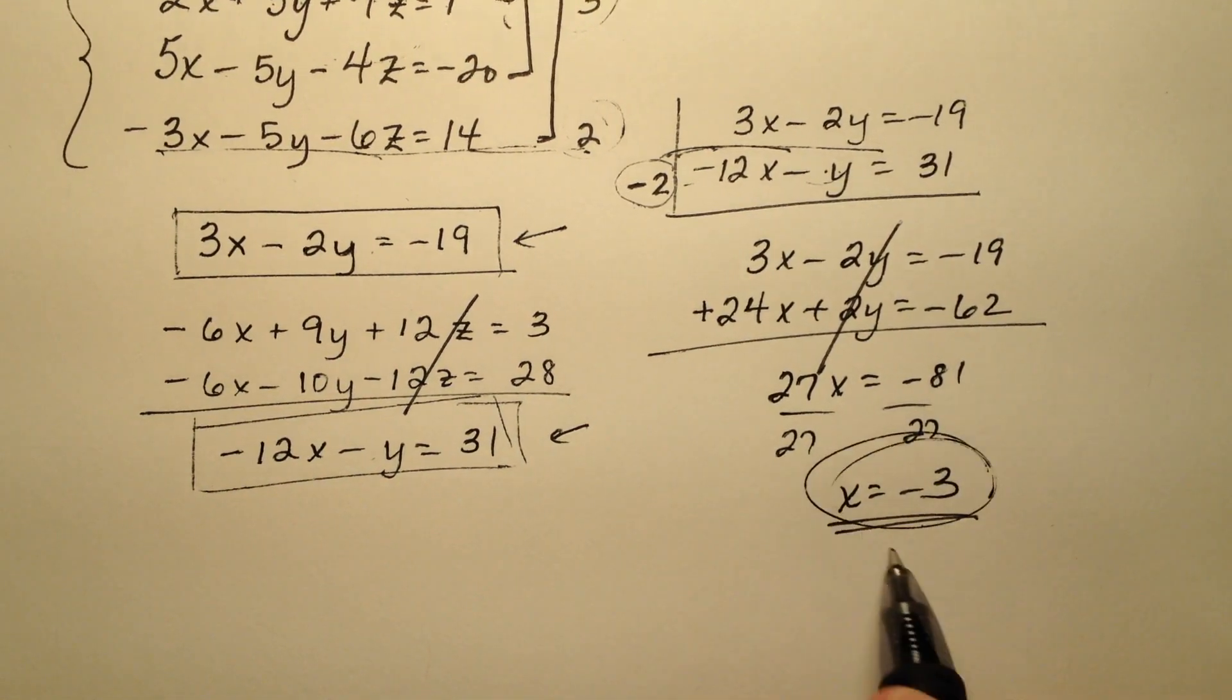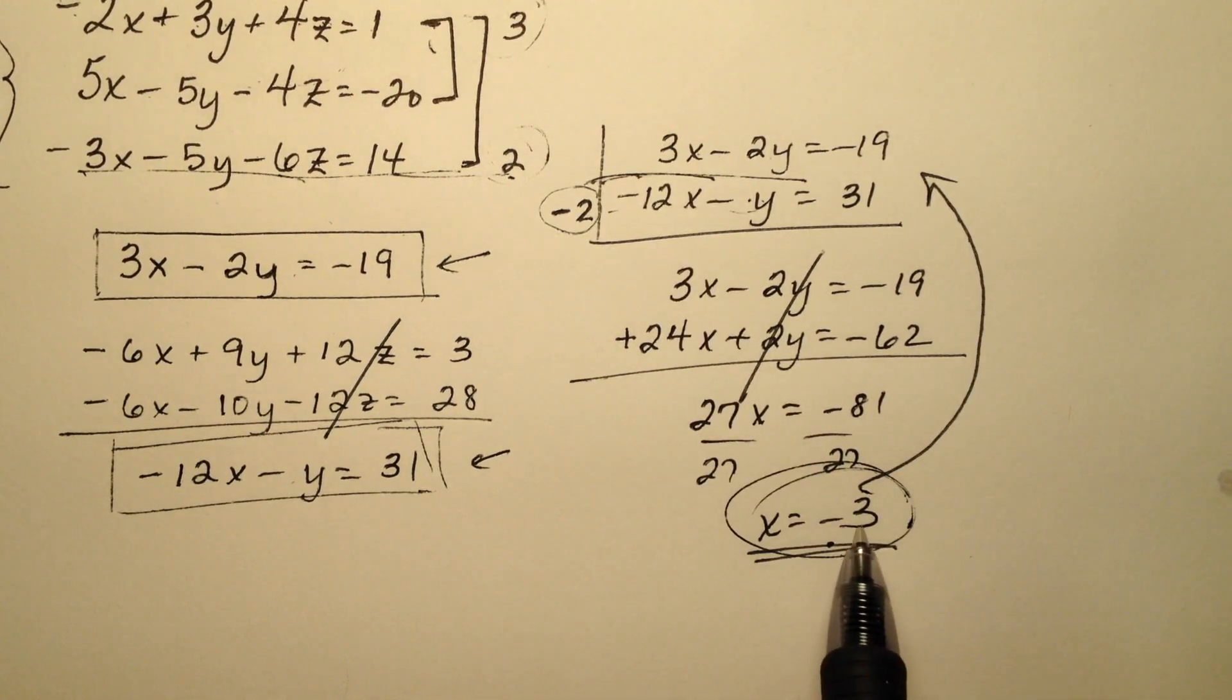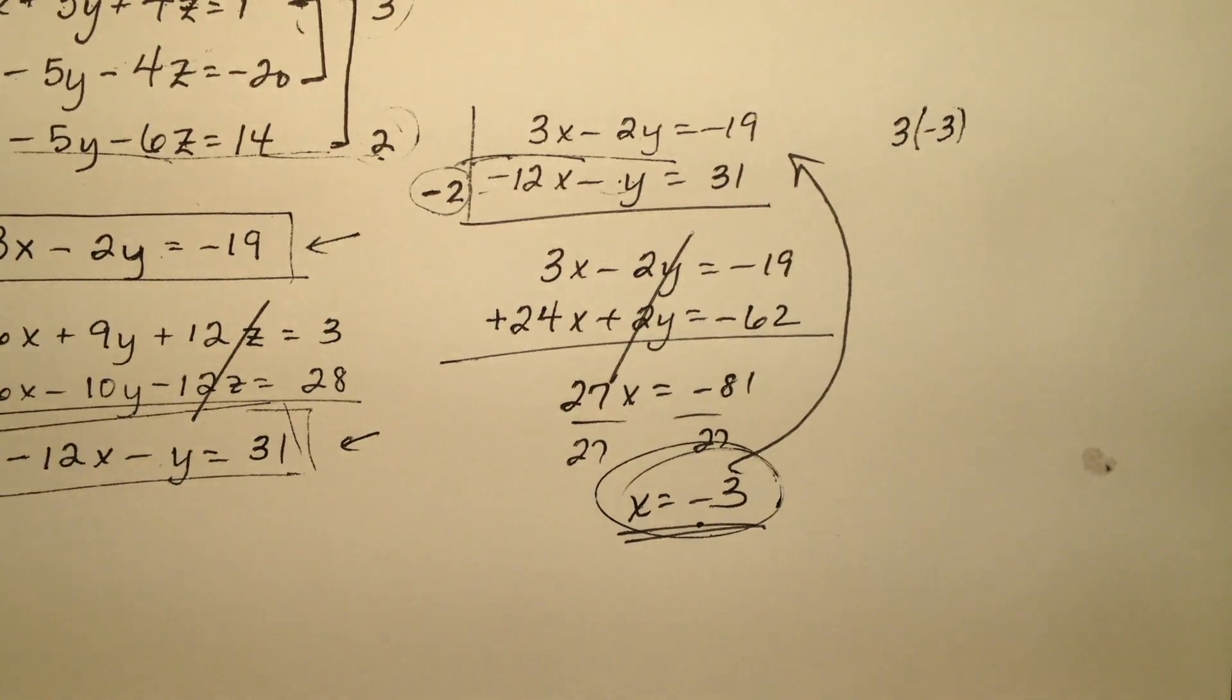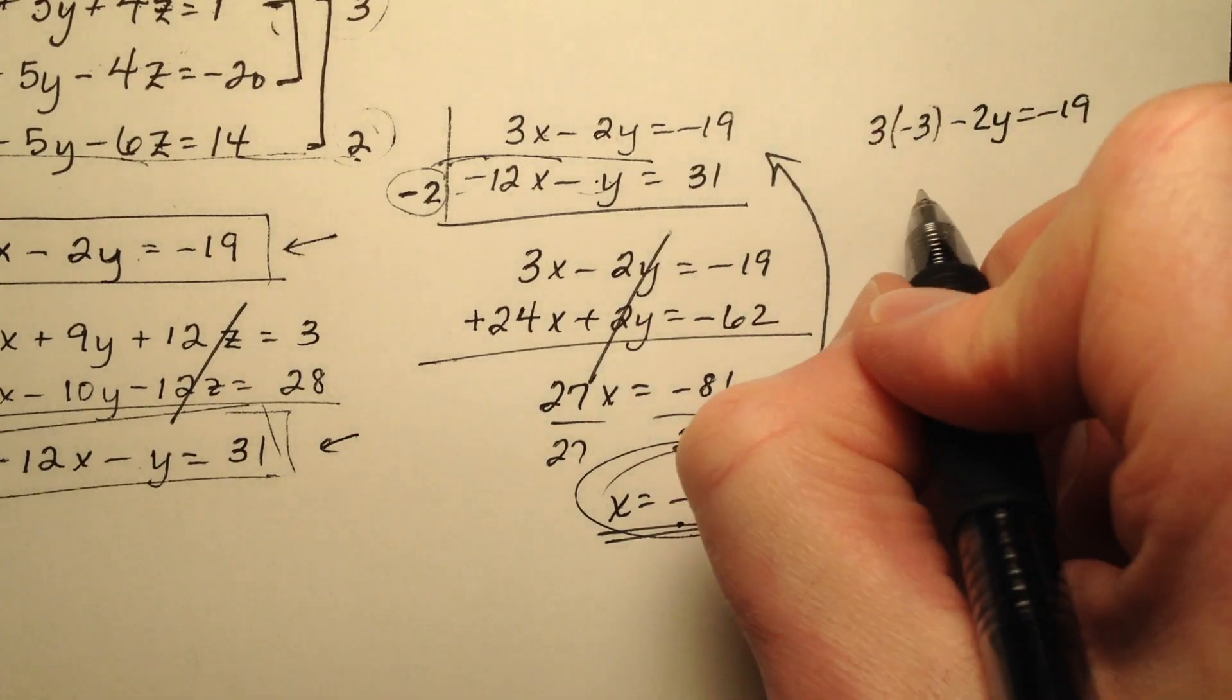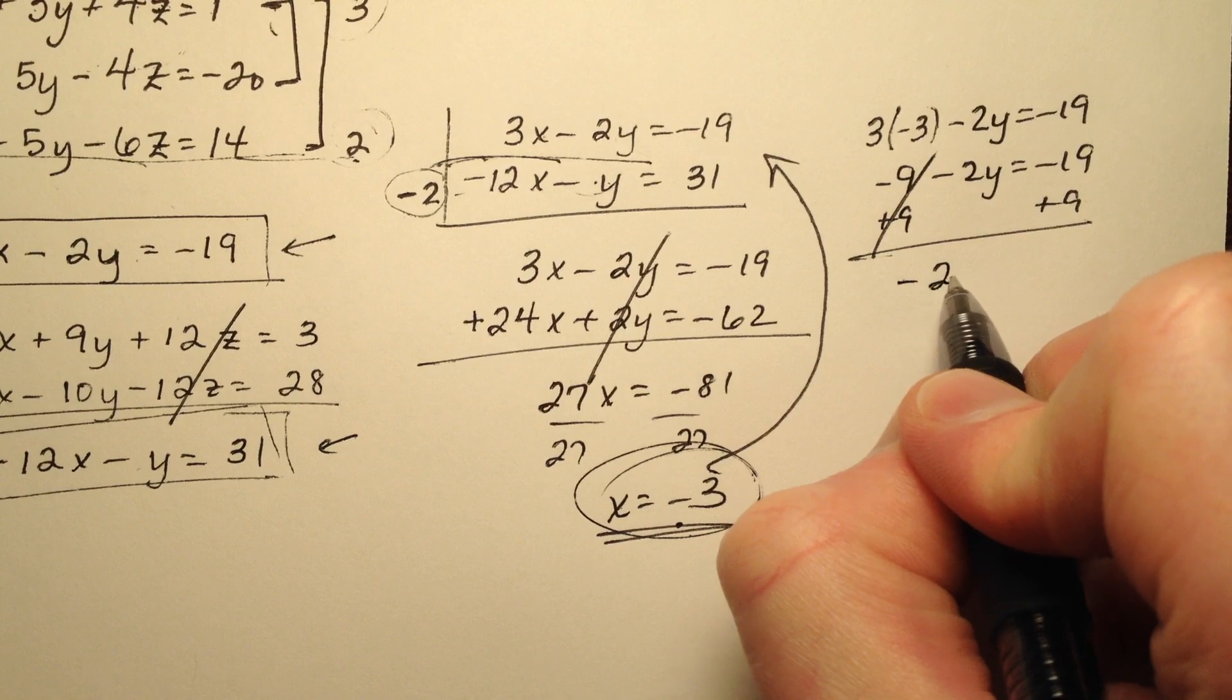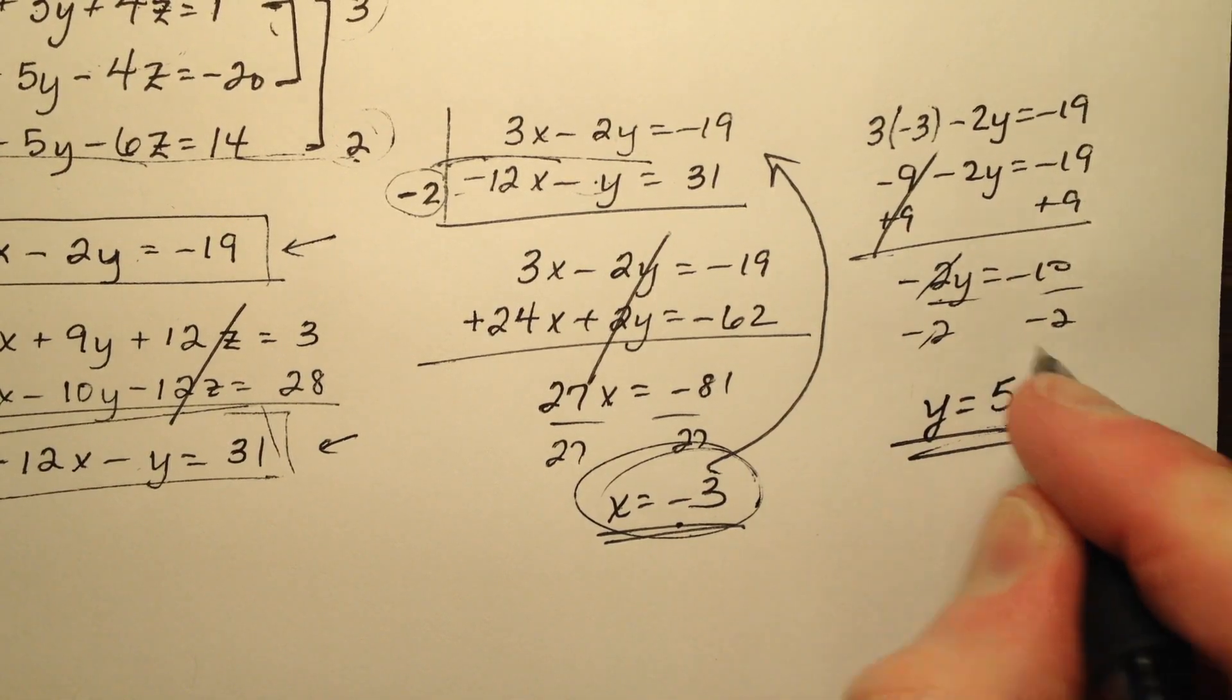So once I know the value for one of these variables, I can go ahead and plug it back in. Let's go ahead and plug it back into one of these equations. It has an x and a y and we know what x is. So 3x, so x is negative 3. And I'm going to say negative 2y equals negative 19. So a negative 9 minus 2y equals negative 19. When I add 9 to both sides, my negative 2y equals negative 10. And a quick division by negative 2 will show me that y will equal a positive 5.